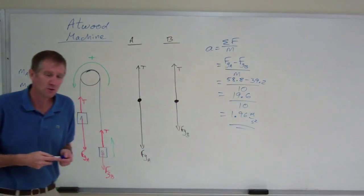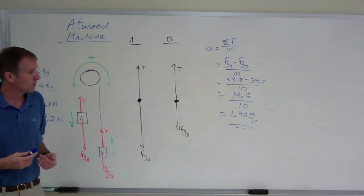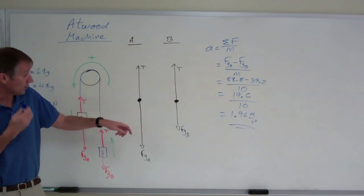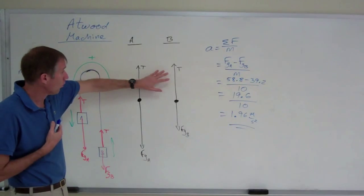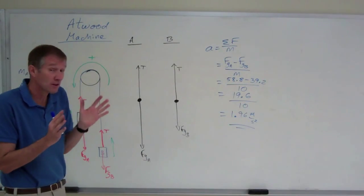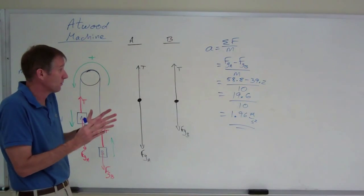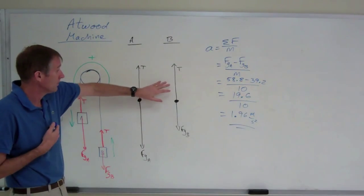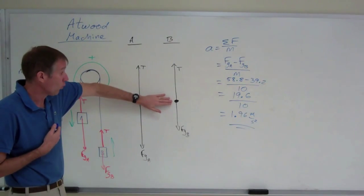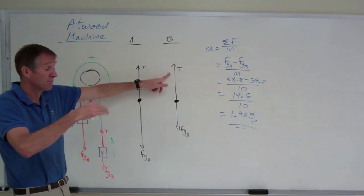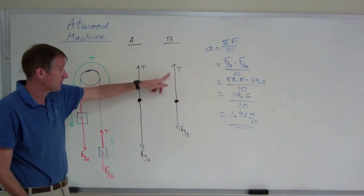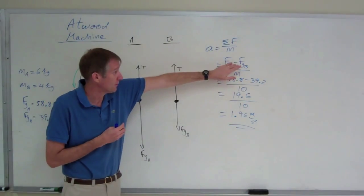The other question I will ask you is determine the tension in the string. You can either look at block B or you can look at block A. Now you don't look at the entire system anymore. Look at an individual block. Why? Because now we need to figure out tension. If you look at the entire system, then tension is internal. Notice tension is not up here.